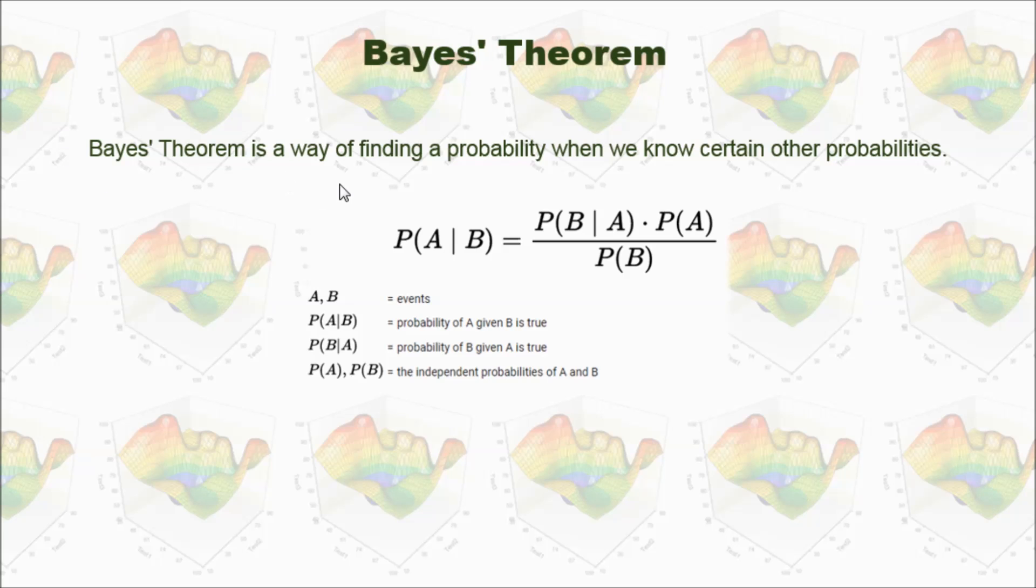Bayes' theorem is a way of finding a probability when we know certain other probabilities. Let's take a look at this formula. Now, we want to calculate the probability of A given B is true. But instead of knowing probability of A given B is true, we know probability of B given A is true, and the independent probability of A and independent probability of B.